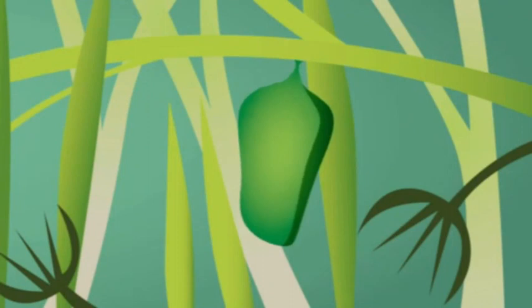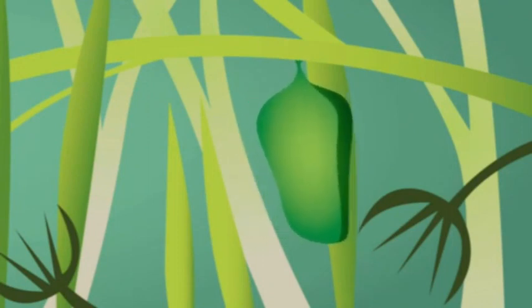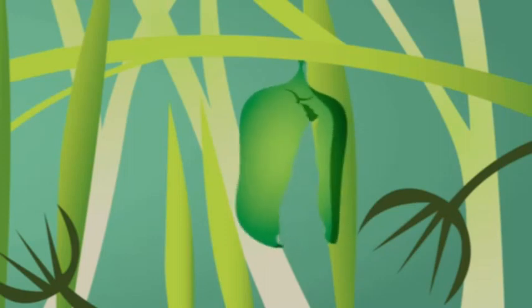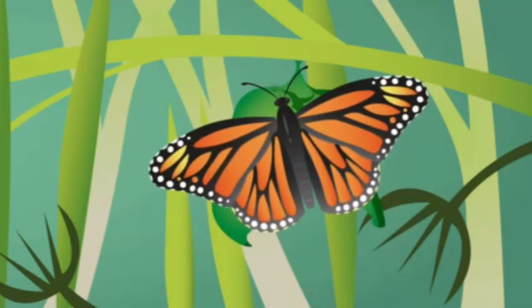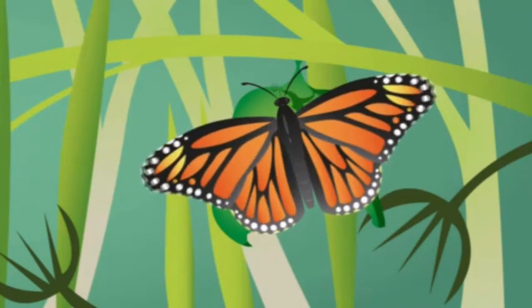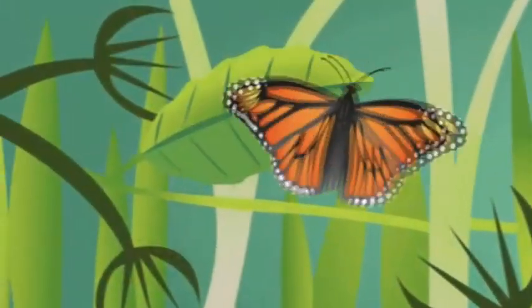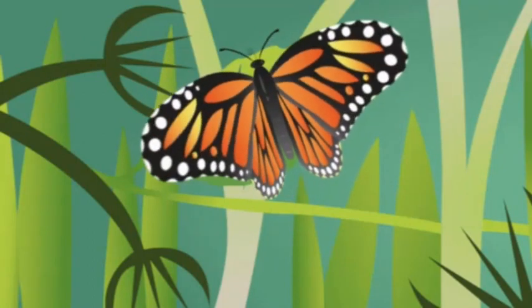What's coming out of the cocoon? Is it a caterpillar? No, it's a butterfly! It's orange and black. It's beautiful. The butterfly flies away. Soon it will find a leaf and lay an egg.